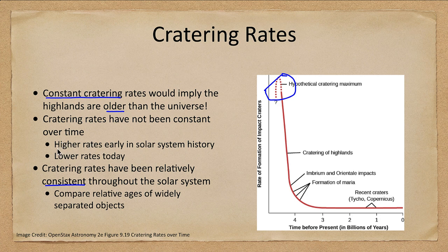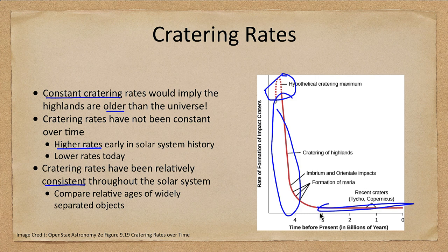What we see is that there were higher cratering rates in the early history — lots of cratering going on. But for the last three billion years, the cratering rate has been essentially constant and very low. So while it's still going on, we get nowhere near the impacts over the last few billion years that we did in the first billion years or so of the history of the solar system.